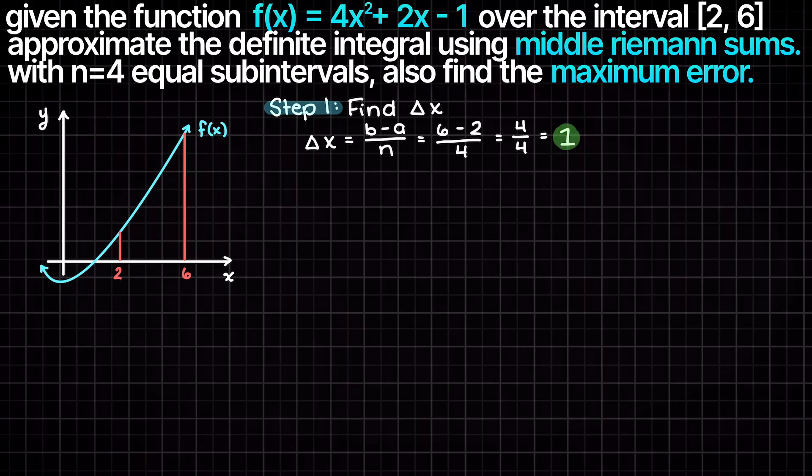Recall also with the middle Riemann sum we evaluate them in the middle or in between our left and right Riemann sum. Therefore our first input-output pair will be at a plus half our step size. So let's add these to our graph here now.